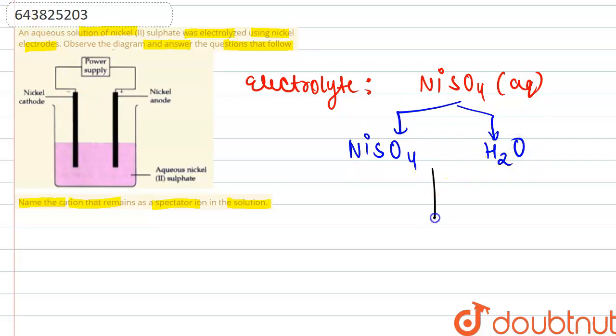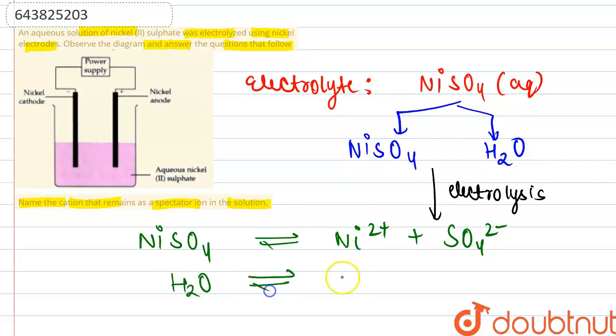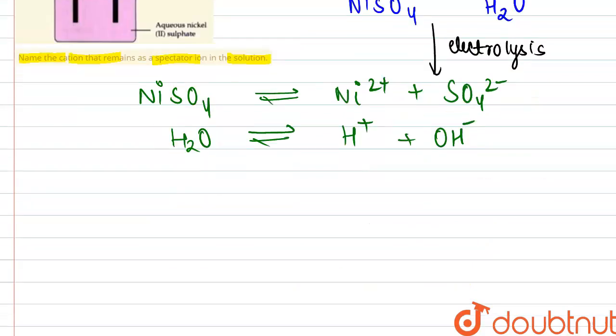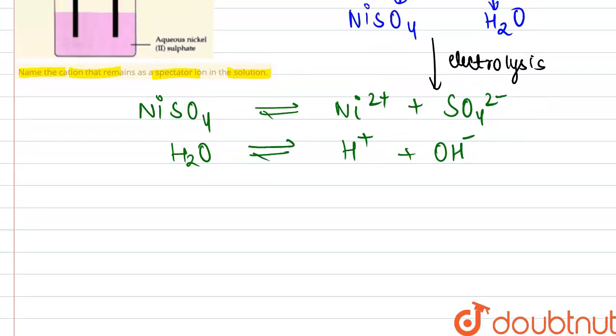On passing electricity and completing the circuit, the electrolysis occurs. Nickel sulfate ionizes to give us Ni²⁺ ions and SO₄²⁻ ions. Similarly, water also ionizes to give us H⁺ ions and OH⁻ ions. Here, the concept of preferential discharge potential will be applied.